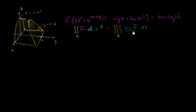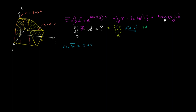So let's calculate the divergence of f first. The divergence of f is the partial of the x component with respect to x — the derivative of this with respect to x is just x — plus the partial of the y component with respect to y, which is also just x (the other term is constant in y, so it's 0) — plus the partial of the z component with respect to z, which is 0 since it's constant in z. So taking the divergence really simplifies things.